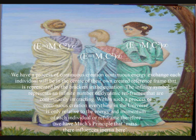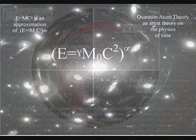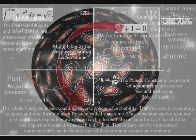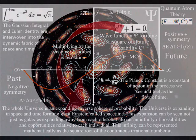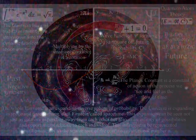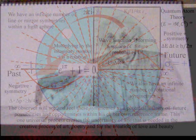The brackets represent the dynamic boundary condition of the reference frame, formed by the surface area of the sphere that forms a two-dimensional boundary condition. The infinity symbol represents the whole universe as an infinite number of dynamic reference frames that are continuously interacting, forming the uncertainty of everyday life. The universe is expanding in space and time, forming what Einstein called space-time. In this theory, this expansion can be seen not just as galaxies expanding away from each other, but also as future possibilities and opportunities relative to each individual.